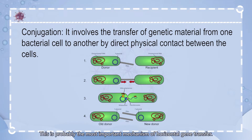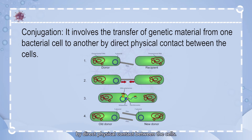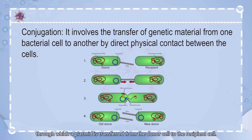Conjugation is probably the most important mechanism of horizontal gene transfer. It involves the transfer of genetic material from one bacterial cell to another by direct physical contact between the cells. A pilus forms between the two bacterial cells through which a plasmid is transferred from the donor cell to the recipient cell.